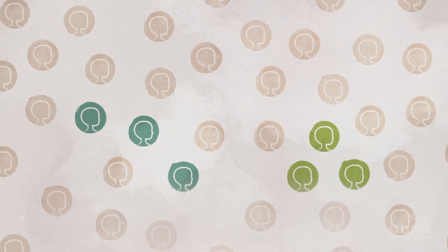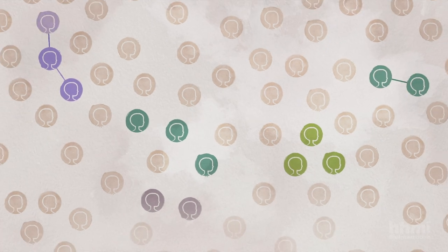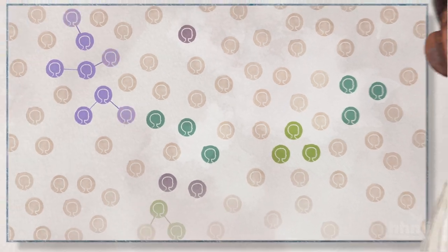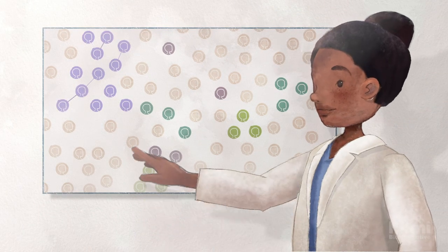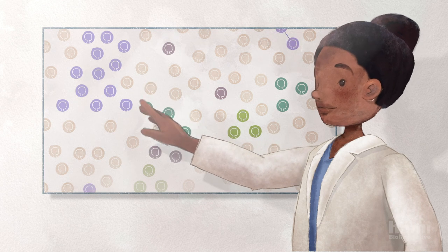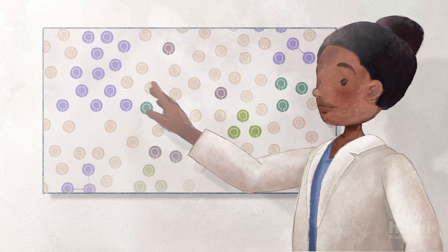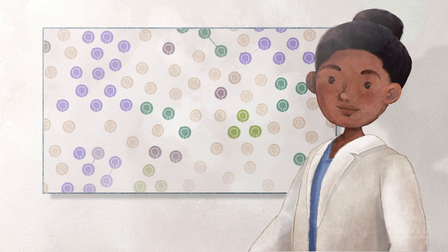Tracking mutations and viruses can help determine where an outbreak started and how it spread. Understanding how virus populations change over time can also help scientists develop treatments and vaccines.